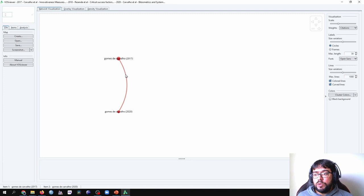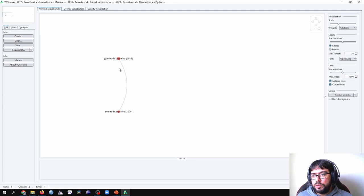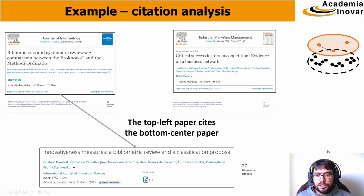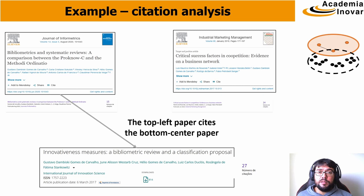Again, VOSviewer does not direct the citation — there is no arrow as shown on the slides. It just has a connection between the documents, not a directed connection. But it still shows the citation link between the two documents. That's it for this video — I hope you enjoyed it and understood how citation analysis works in VOSviewer and what the citation links represent. See you in the next videos!